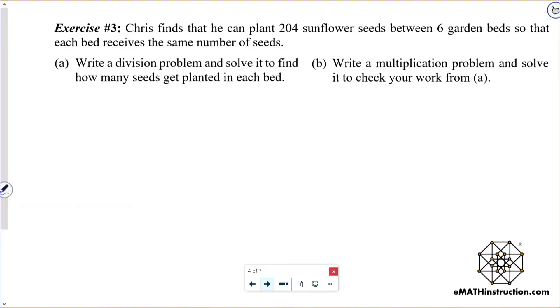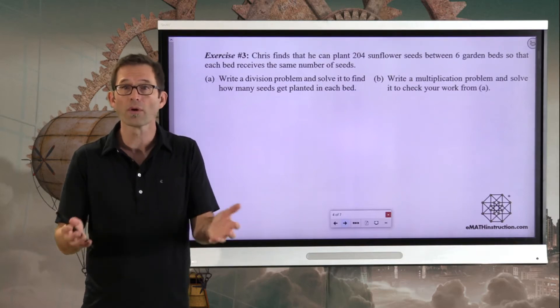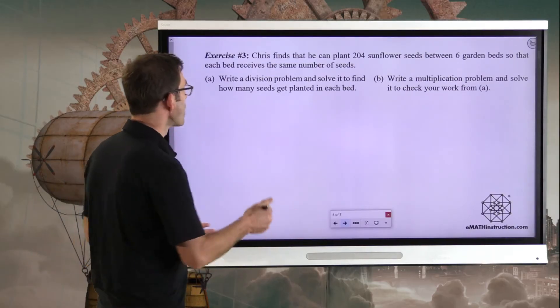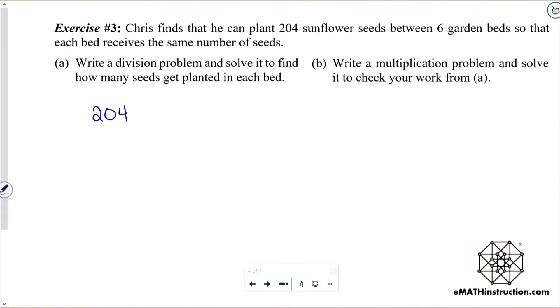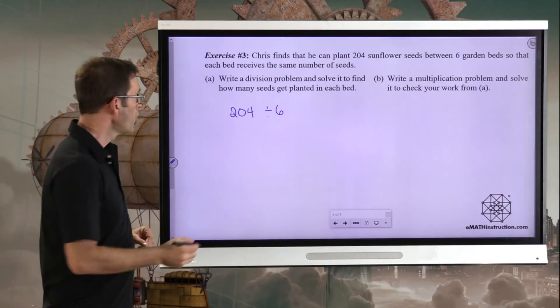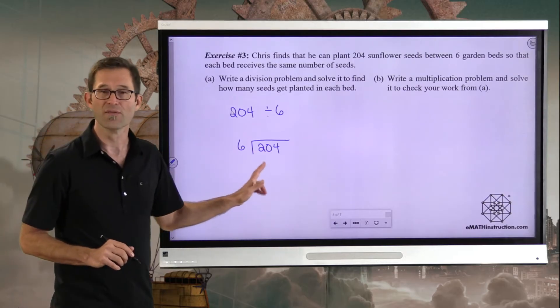Number 3. Chris finds that he can plant 204 sunflower seeds between six garden beds so that each bed receives the same number of seeds. Letter A asks us to write a division problem and solve it to find out how many seeds get planted in each bed. This is all about division. I've got these 204 sunflower seeds. I've got six garden beds that I want to plant them in. How many do each get? Well, the division problem is very simple. I want to find 204 divided by six.